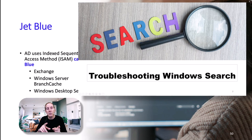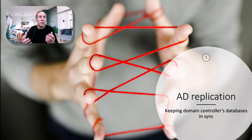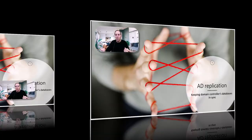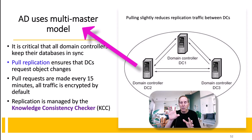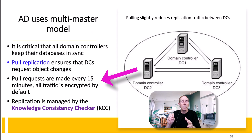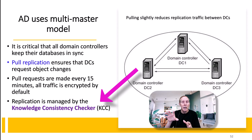Because we have more than one domain controller in a domain, replication — keeping these databases in sync — is very important. Microsoft uses a multi-master model: no domain controller has higher authority than another. They use pull replication to keep in sync. Pull requests are made every 15 minutes, all traffic is encrypted between domain controllers, and a feature called KCC — Knowledge Consistency Checker — verifies all data moving across domain controllers to ensure accuracy.